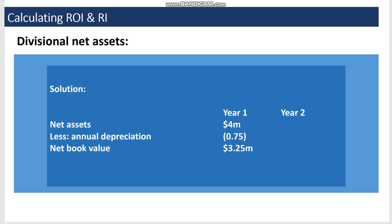For net assets, the total investment is 4 million dollars. Annual depreciation is subtracted each year to give the net book value: 3.25 million dollars at the end of year one, which becomes the opening balance of year two. Unless otherwise stated, always use the opening value of net assets to calculate ROI and RI.